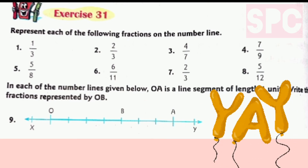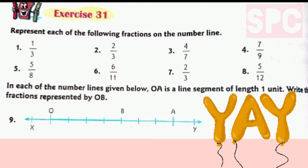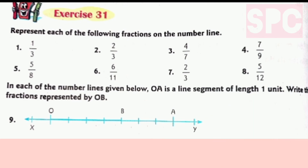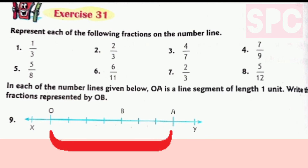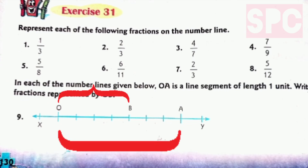I hope you all understood how to represent any given fraction on the number line. It is very simple. Let us move on to the next question. In each of the following number lines given below, OA is the line segment of length 1 unit. Write the fraction which is represented by OB. In the rest of the questions, the number line is already provided with the division of OA already done, and the number of parts we have to consider, which will be our numerator, is also represented as OB. We just have to write the fraction represented by OB.